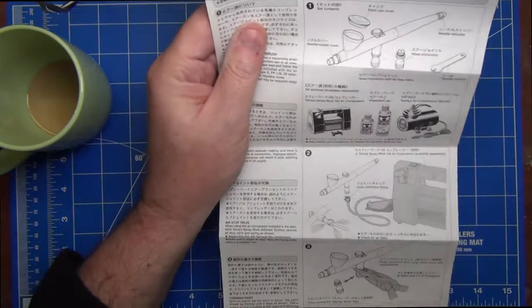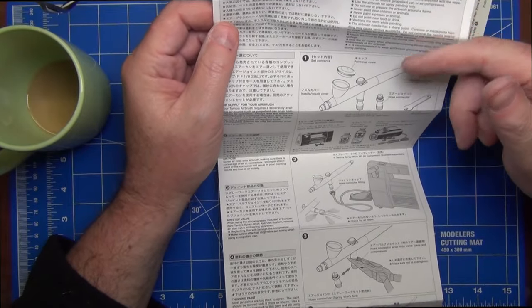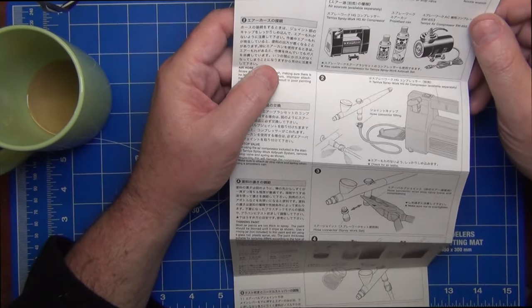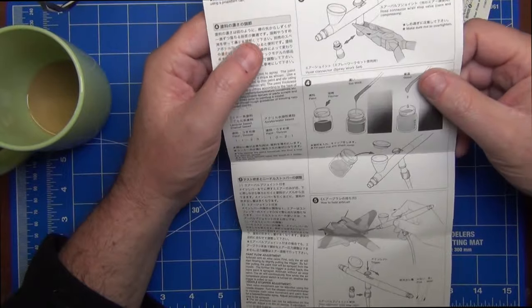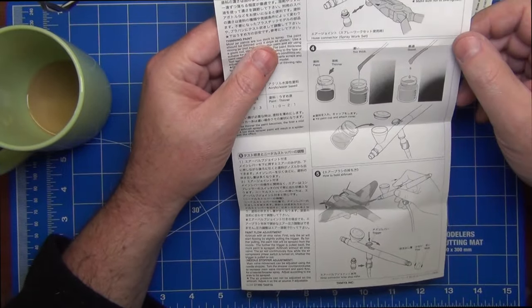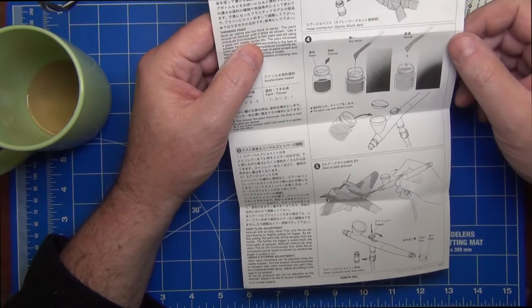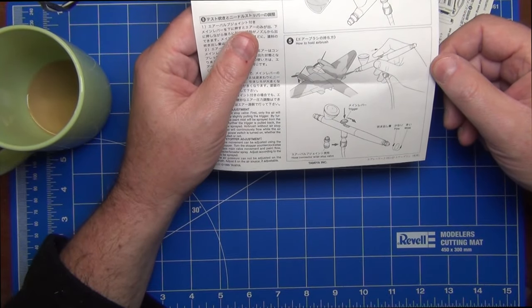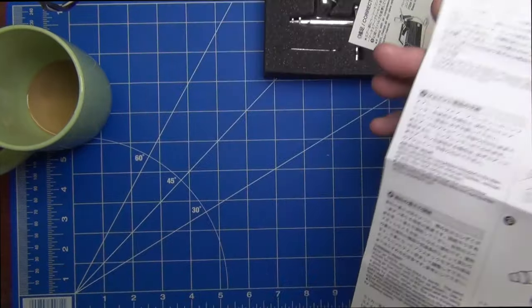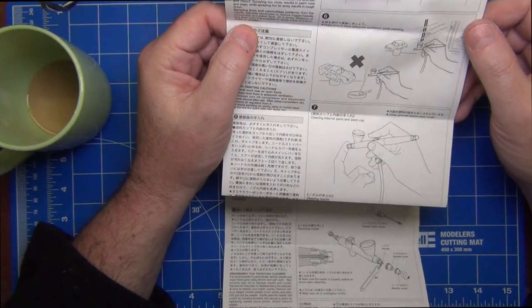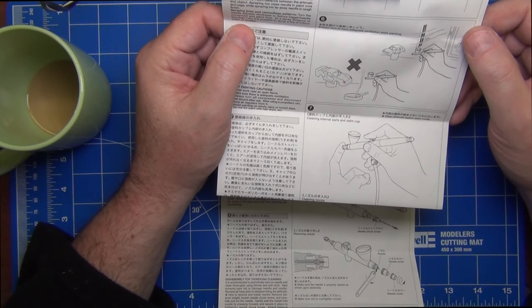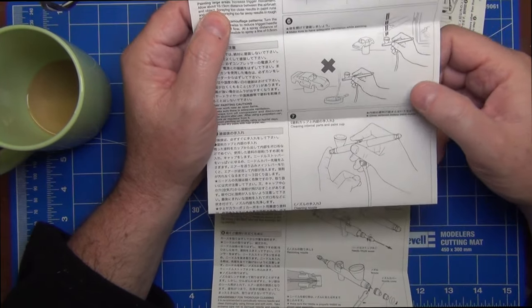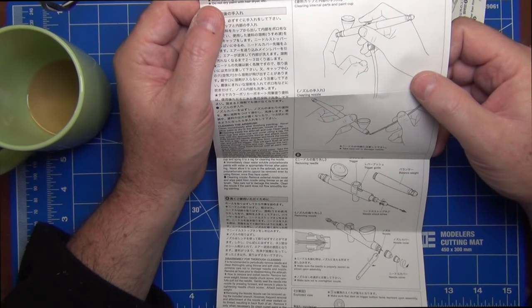We get this leaflet written in Japanese and also in English which is handy. We get a little bit of description about how to connect the airbrush to the compressor, information about the right consistency to mix the paint for it to work successfully with the airbrush, and basic instructions on how to hold the airbrush and how it basically works.